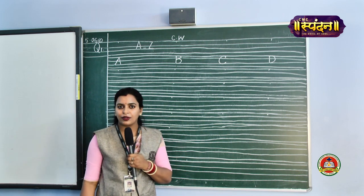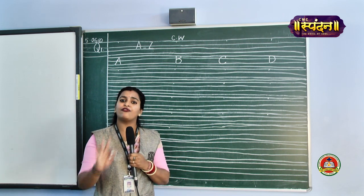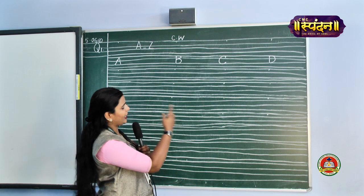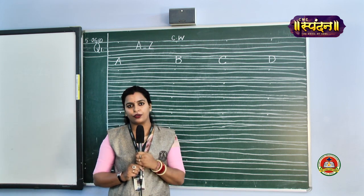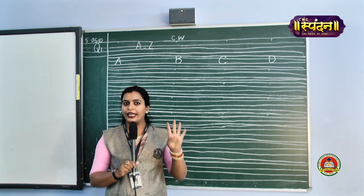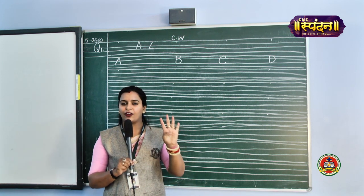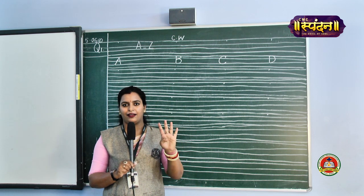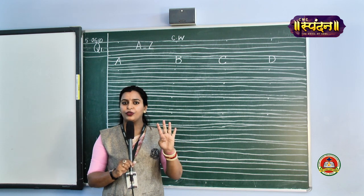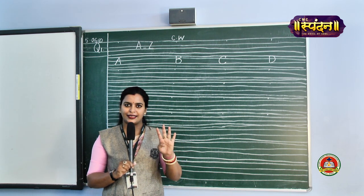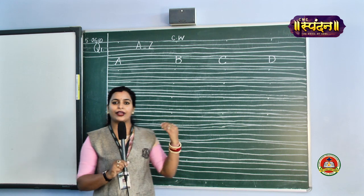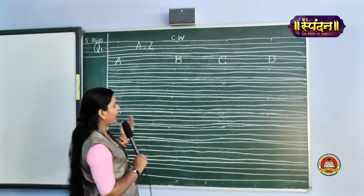Dear children, please remember we write only four alphabets in a line. Not more than four. Only four alphabets in one line. It will look beautiful. Now we come to the next line: E, F, G, H.